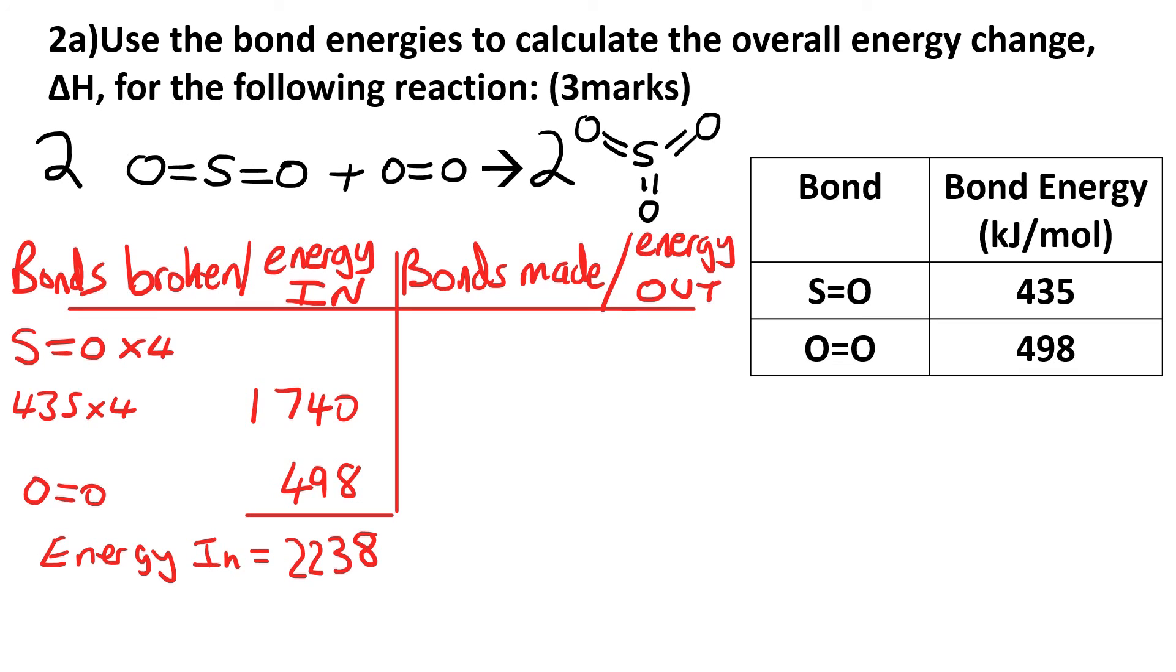And then the bonds made, we've got six S-O bonds, again because we've got a big 2 in front of the molecule. So 435 times 6 comes to 2610, and that is the energy out.